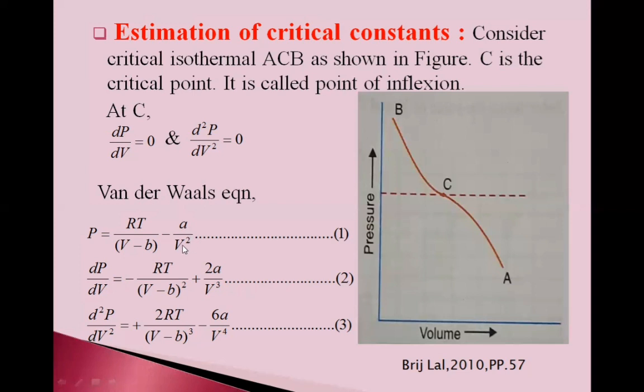Here minus sign. Again, here V raised to 2. If we take this V square here at numerator, then V raised to minus 2. So, differential of V raised to minus 2 is minus 2V raised to minus 3. So, minus minus plus, and V raised to minus 3 on denominator side becomes V cube. So, this 2a upon V cube. Equation 2.